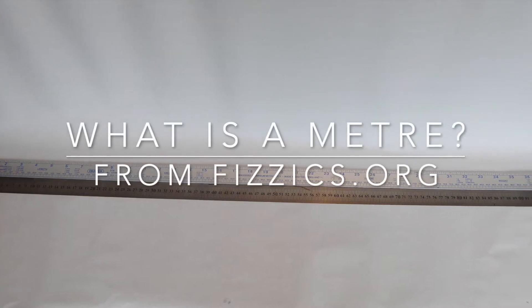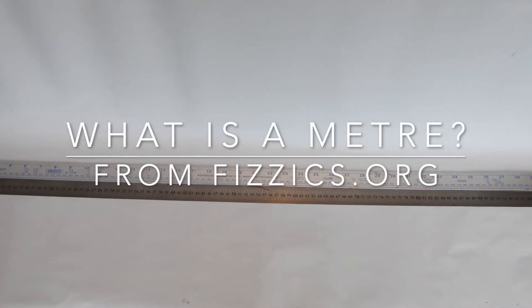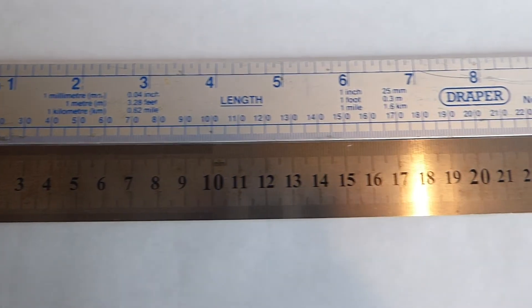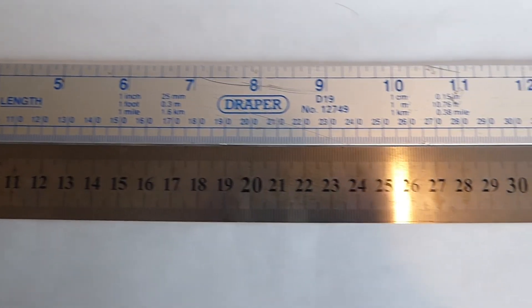These are two standard metre rules that I use for odd jobs around the house. Putting them side by side, they look as if the measurements are identical. You'd certainly expect them to be.